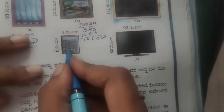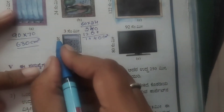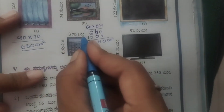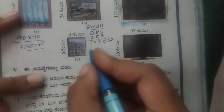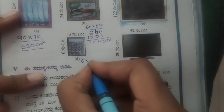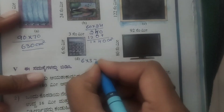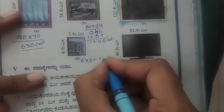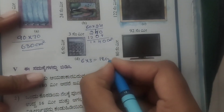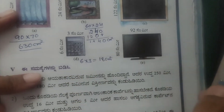Fourth one: length is 6 cm and breadth is 3 cm. That is 6 into 3. Six threes are 18 cm².